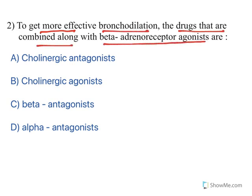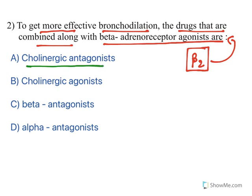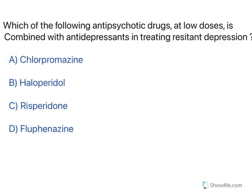Next question: to get more effective bronchodilation, which drug class is combined with beta-2 adrenoreceptor agonists like salbutamol and terbutaline? Cholinergic drugs cause bronchoconstriction, so using cholinergic antagonists gives effective bronchodilation. Therefore, the drugs combined with beta-2 agonists are cholinergic antagonists — option A is correct.